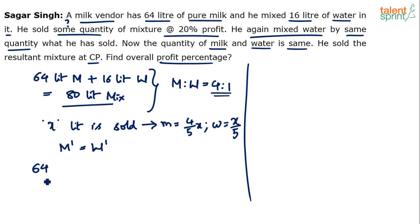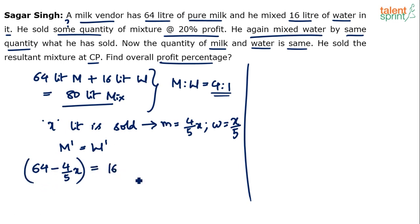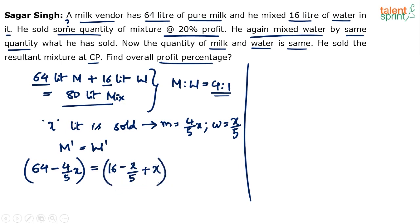So what will the remaining milk be? 64 liters was available, from which we have removed 4x/5. We have not added any milk, so milk remaining is 64 minus 4x/5. This should equal the water. Water: initially 16 liters, from which we subtract x/5 (the water that was sold), and then add x (the water added back). So the equation is: 64 − 4x/5 = 16 − x/5 + x. Remember: remove water from the sold portion, then add back x liters of water.